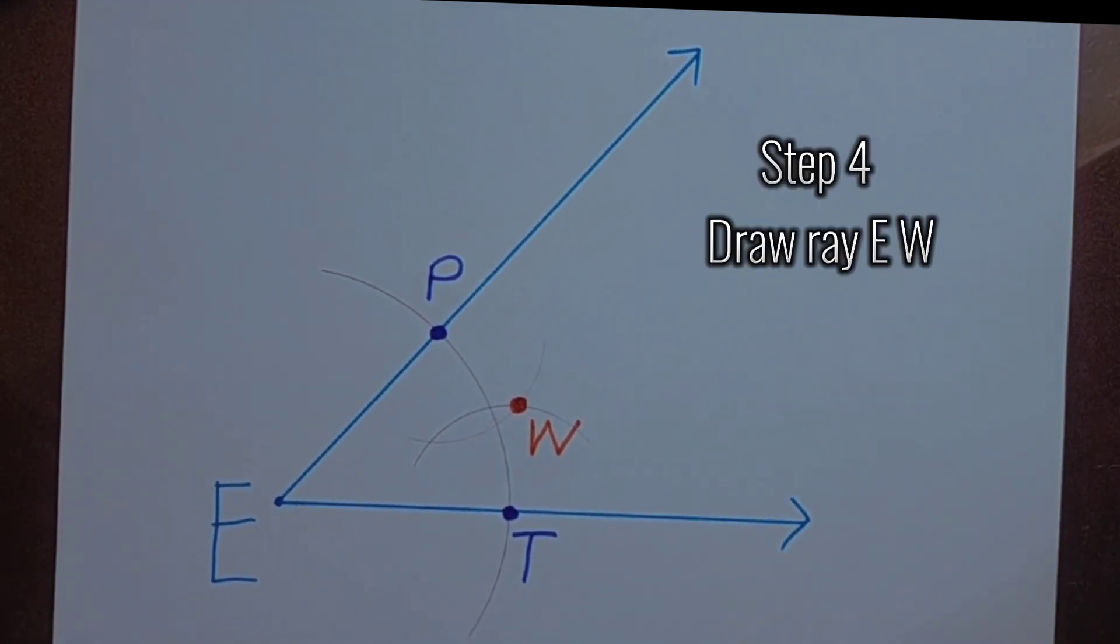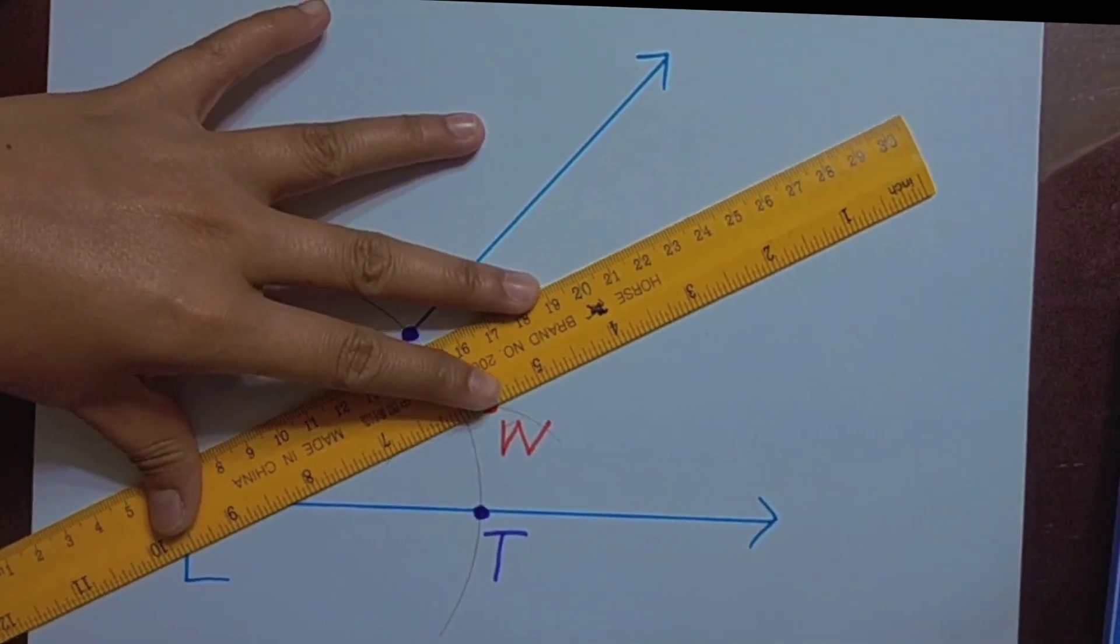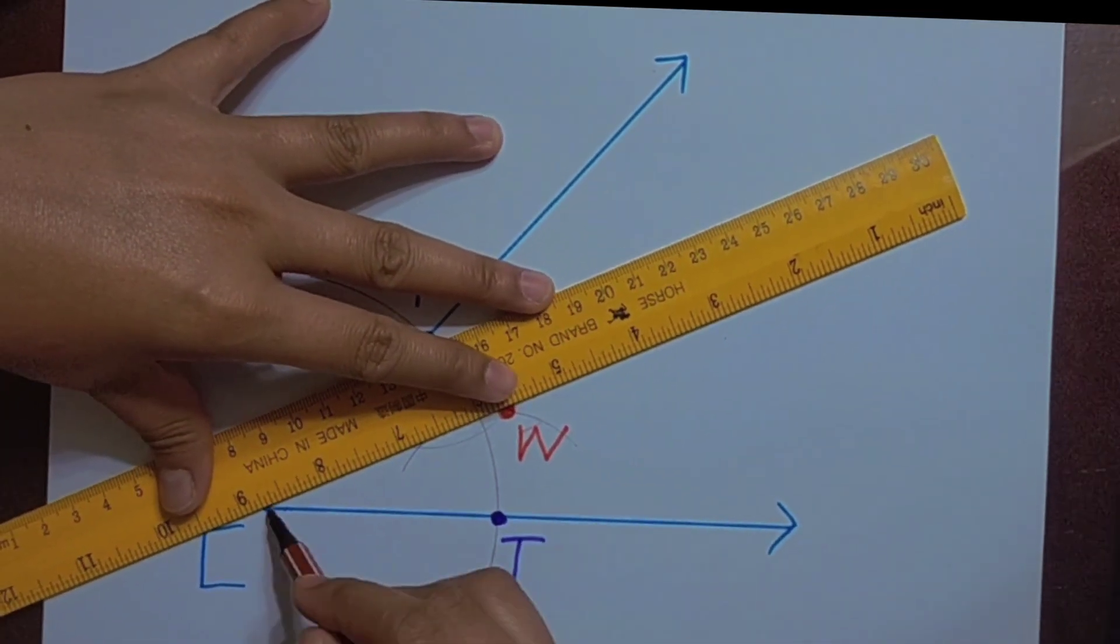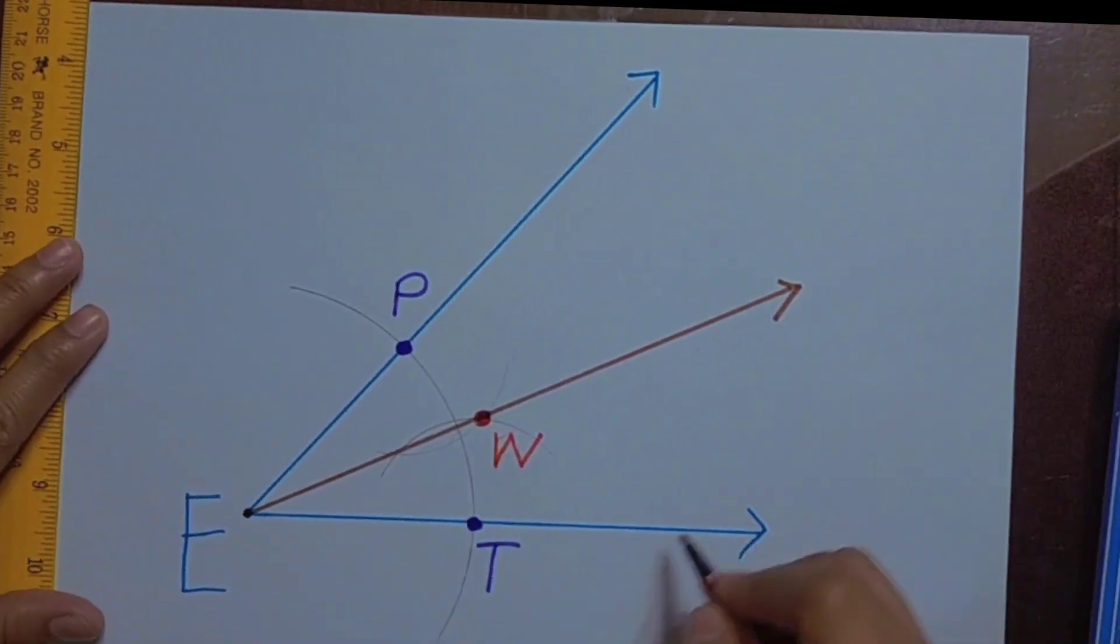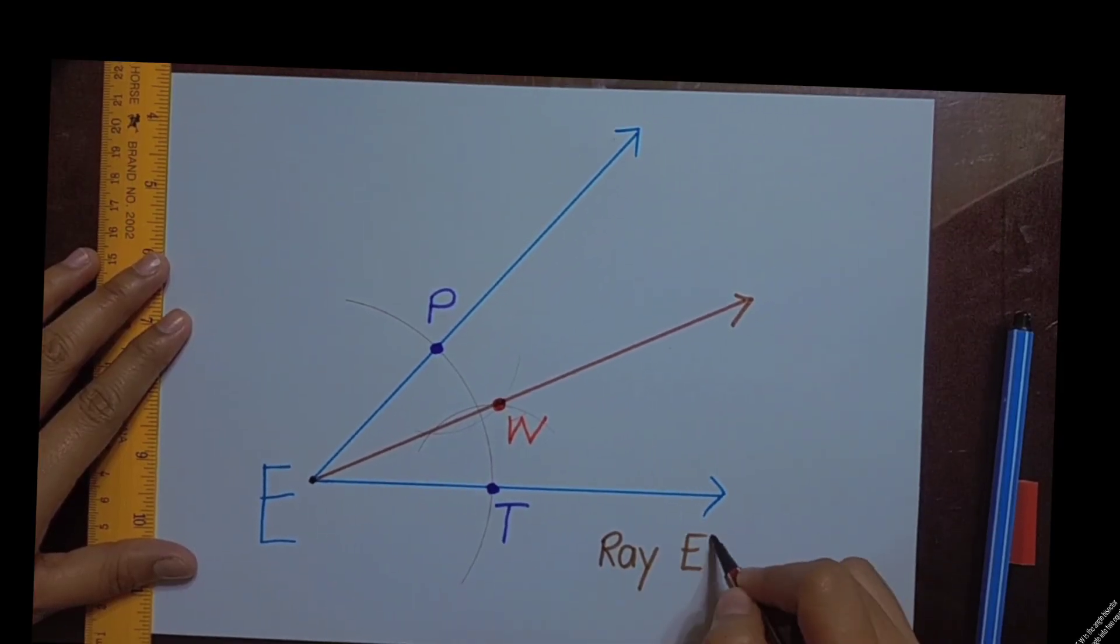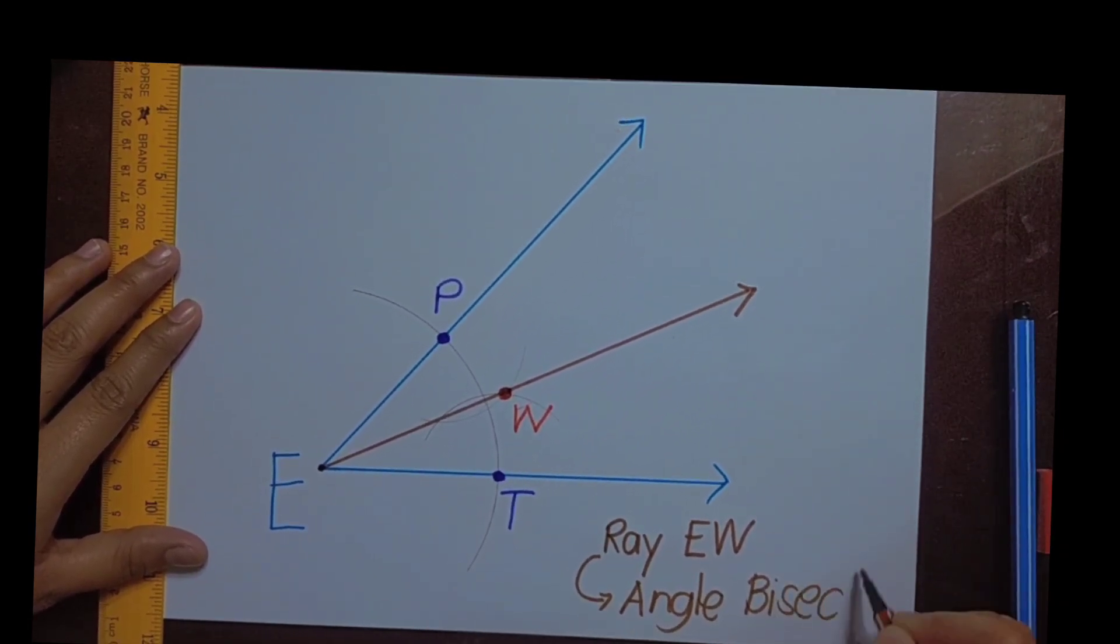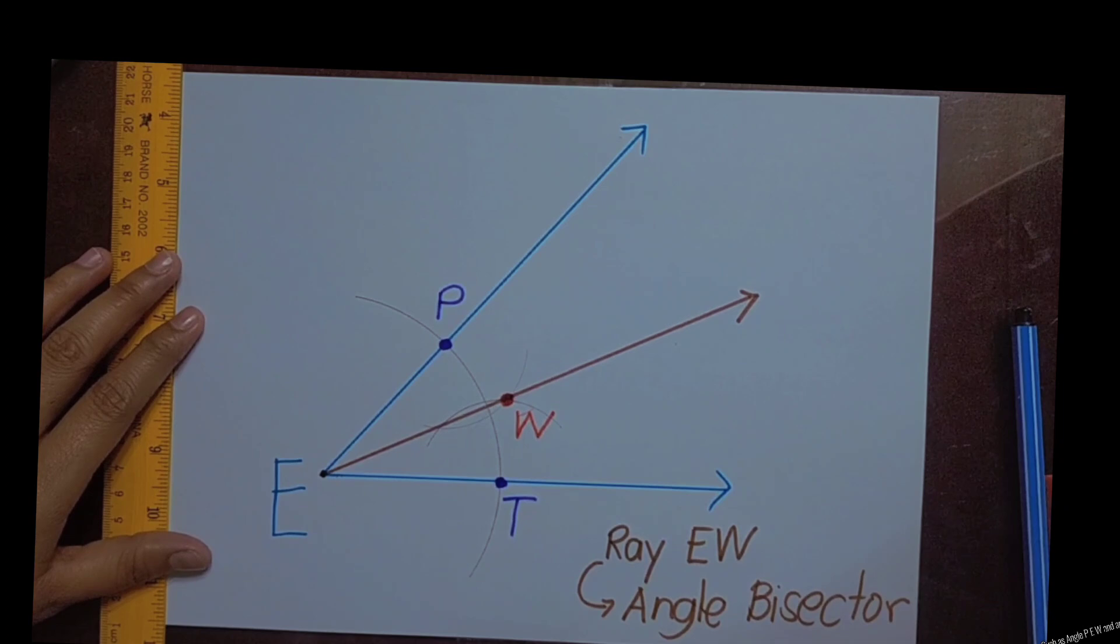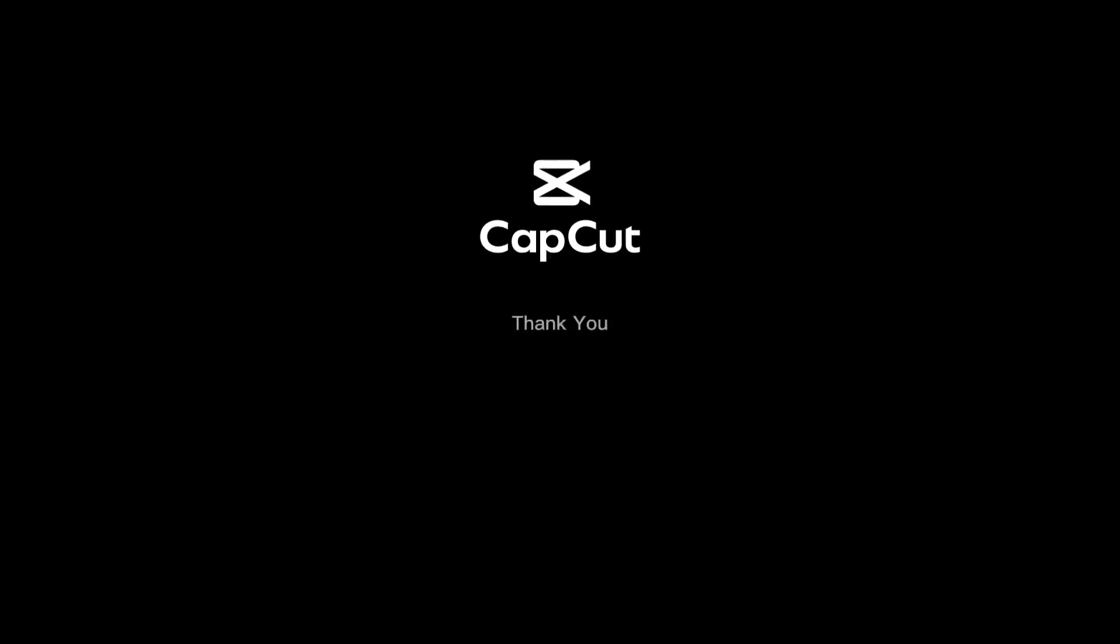Step 4. Draw Ray EW. Ray EW is the angle bisector. It divides the angle into two equal angles, such as angle PEW and angle WET.